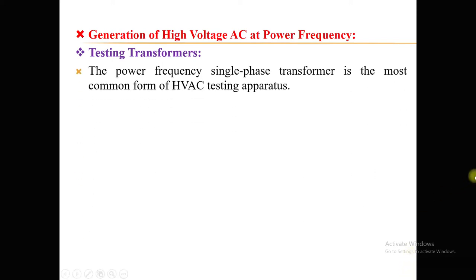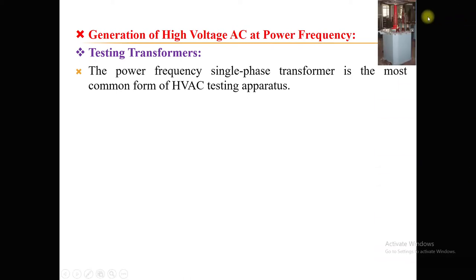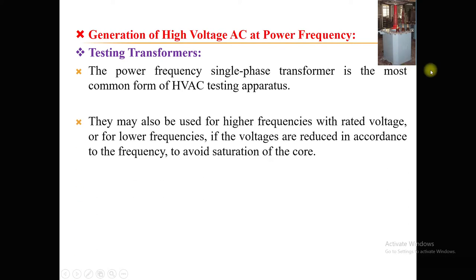The power frequency single phase transformer is the most common method to produce high voltage AC. As the name 'transformer' implies, we are producing high voltage AC at power frequency by stepping up the voltage from a low value to a high value. These testing transformers are step-up transformers, always in single phase form. Here I have shown a photograph representing a testing transformer — you can see it is a single phase, step-up unit.